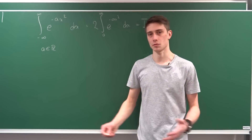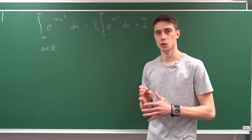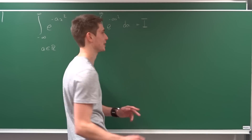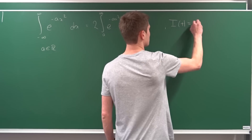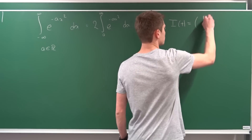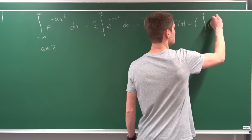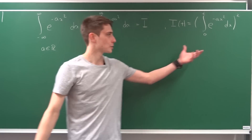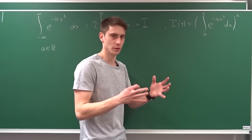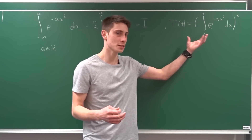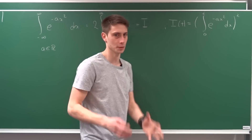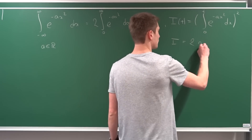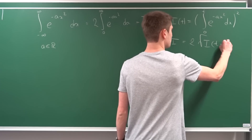We are going to call this I for simplification purposes, and we are going to construct a new integral with a parameterization. Let's define I in terms of t as the integral from zero to t of e to the minus ax squared dx, but the whole thing squared. Our original I is nothing else than two times the square root of I(t) as t approaches infinity.